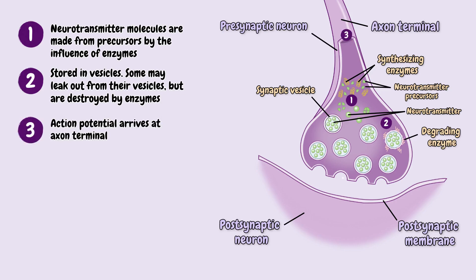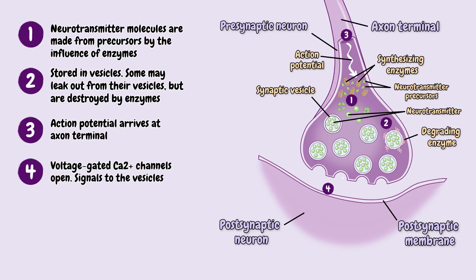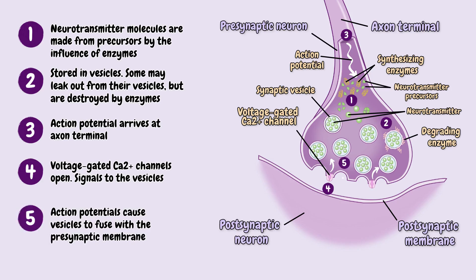Number three, the presynaptic neuron sends an action potential down its axon, activating sodium and potassium channels along the way. Number four, it reaches the presynaptic terminal to activate the voltage-gated calcium channels to open and release calcium into their own cytoplasm. Number five, these positively charged calcium ions cause the tiny synaptic vesicles filled with neurotransmitters to fuse with the cell membrane.